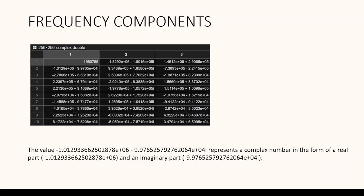Now, if you take any one of the cells in the matrix, the value given here represents a complex number in the form of a real part and an imaginary part. We will discuss in detail what the real part conveys as well as what the imaginary part of the complex function conveys in terms of the value and features of the image.